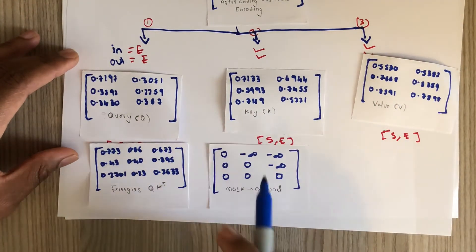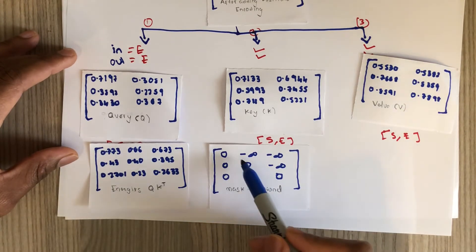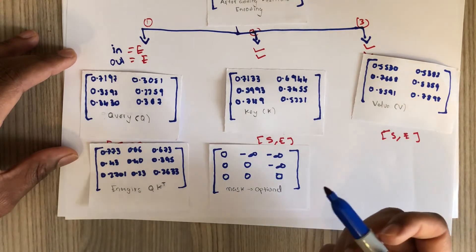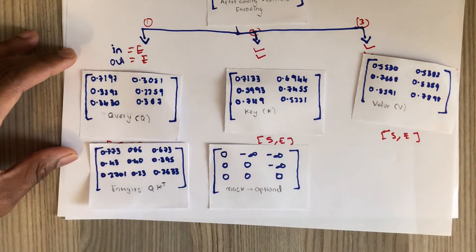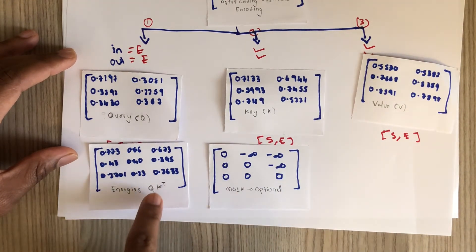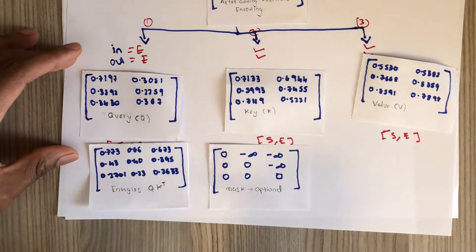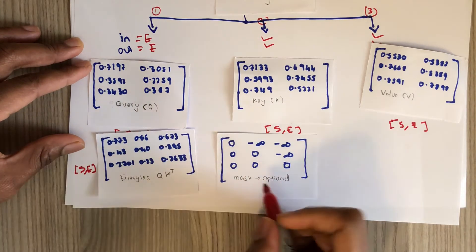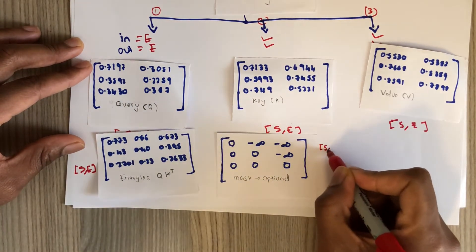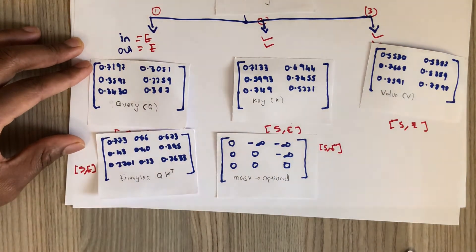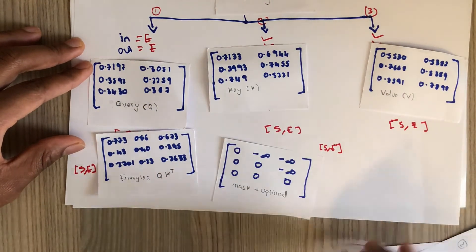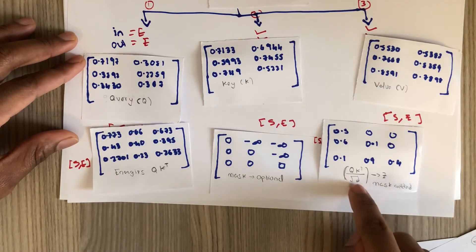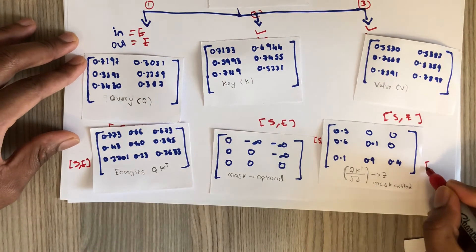After computing Q times K-transpose divided by the square root of the embedding dimension, we need to add a mask because we do not want words to attend to future words. The mask has zeros on and below the diagonal and very large negative numbers above the diagonal. We do this because the softmax of large negative numbers is essentially zero. The dimension of this result is S by S.